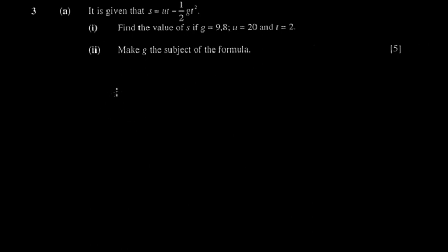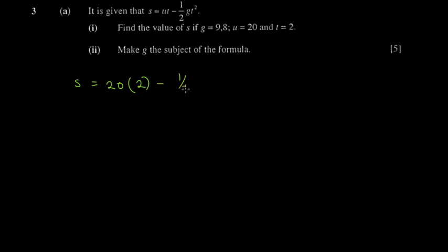We're going to use the space. It says s equals this expression, so whenever you're substituting, my best advice is to use brackets for everything. So s equals u which is 20, multiplied by t which is 2, minus half, then g which is 9.8, then t which is 2, squared. There's no need to work this out manually — you can just punch it into a calculator.